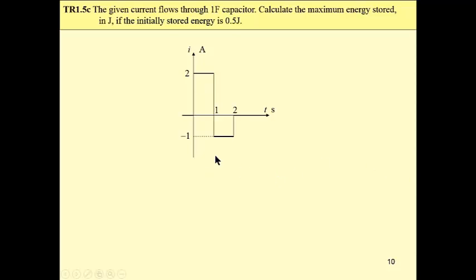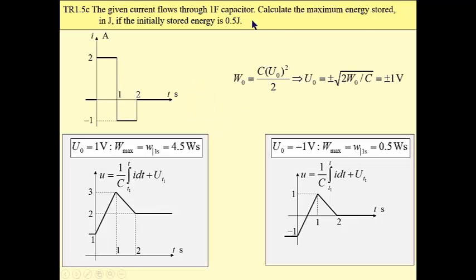Now let us assume that the initially stored energy is not zero. Let us assume that this energy is 0.5 Joules. What does it mean? That we have some voltage initially across the capacitor. From this formula, we may find that it can be either plus or minus 1 volt.